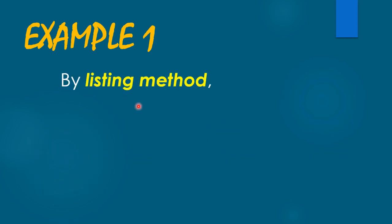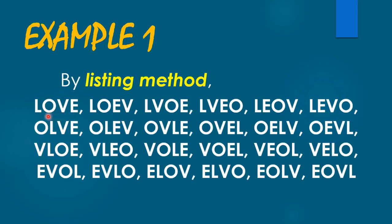Using the listing method, from the word LOVE, we have letters L, O, V, and E. So we can have the arrangements L, O, V, E. We also have L, O, E, V. This one is different from the first arrangement because our V here is the third letter, unlike in this one where the third letter is E. The same manner with the fourth letter — this one is E, and on this one we have letter V.